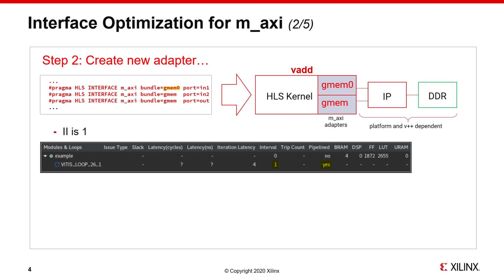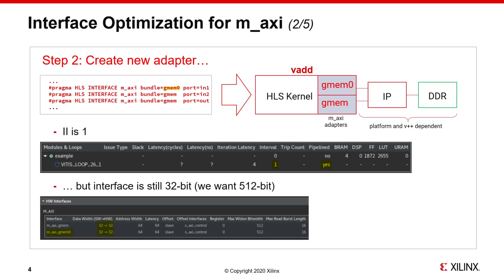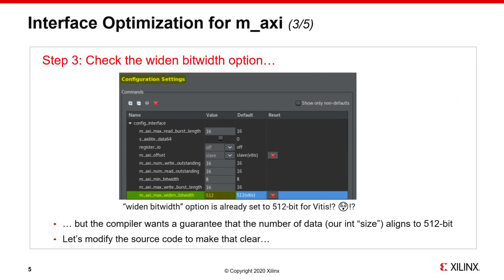Still, the interface remains at 32-bit wide because we are processing integer data types. But we were hoping to have the tool widen the interface to 512 bits to take advantage of the IP capabilities of the platform for the Alveo Accelerator card. Once we check the solution settings in the HLS tool, we do see that the maxi interface option to widen the bit width is already set to 512 bits. But we didn't get 512 — we only got 32 bits. The reason is that the compiler wants a guarantee that the data transfers align to 512 bits.